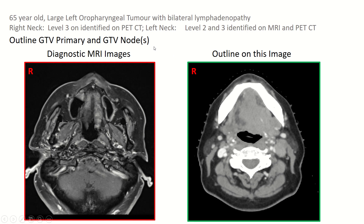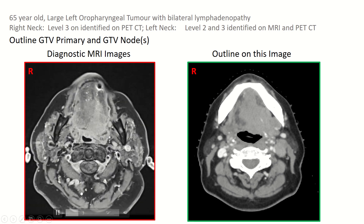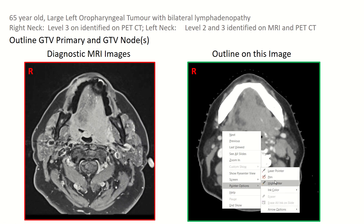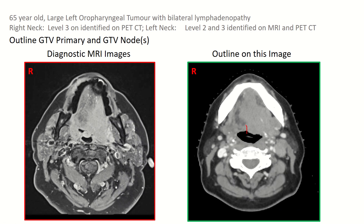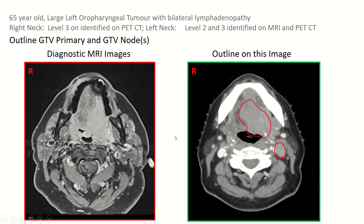Here is an example slide of how one can use the draw function. You have the image data set on the left and the CT slides on the right to outline. In this example case, it is to draw the primary GTV and GTV nodes. You select the pen function and draw. At the end of the station, you will have four minutes of discussion with the examiner, and then the bell goes and the station completes.